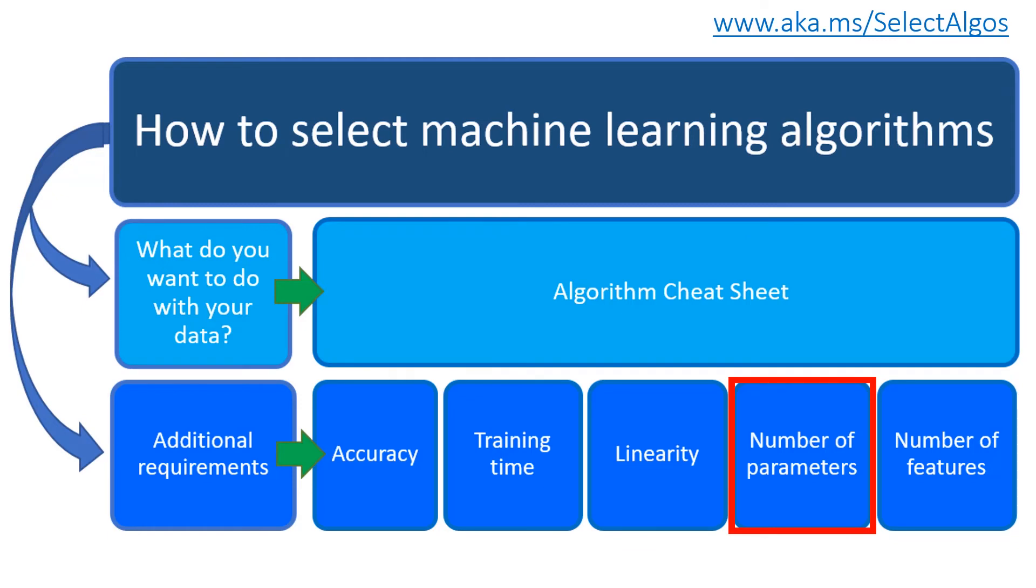Number of parameters. Parameters are different ways that a data scientist can use to set up an algorithm. There are numbers that affect really the behavior of an algorithm such as error tolerance or number of iterations or options between variants of how the algorithm behaves.